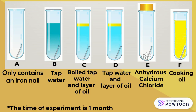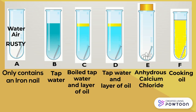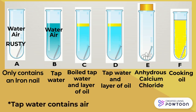The iron nail in test tube A is exposed to both rusting factors, which are water and air. Even though it looks empty with only the iron nail inside, it actually contains air and also water from water vapour. So nail A becomes rusty after one month. The iron nail in test tube B is also exposed to water and air because tap water contains air. So nail B also becomes rusty after one month.